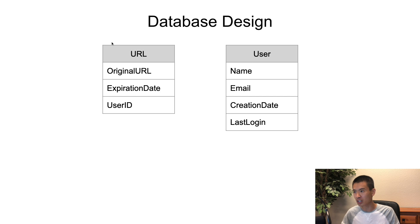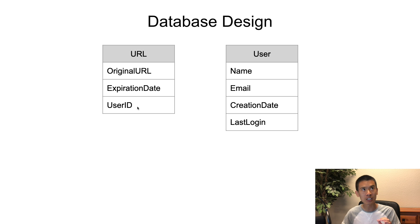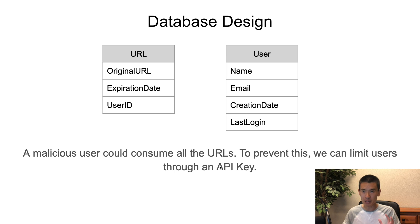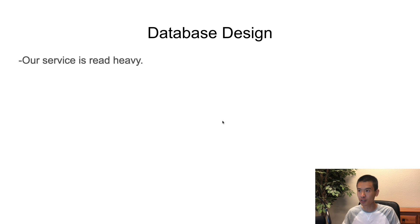Here's our database design. We'll have two entities: URL and User. The URL will have the original URL, the shortened URL, an expiration date, and the user ID of the person who created it. The User will have name, email, creation date, and last login. You might notice I didn't need to create an account on TinyURL, but having users in the database lets us prevent abuse by limiting users through an API key. Our service is read-heavy.